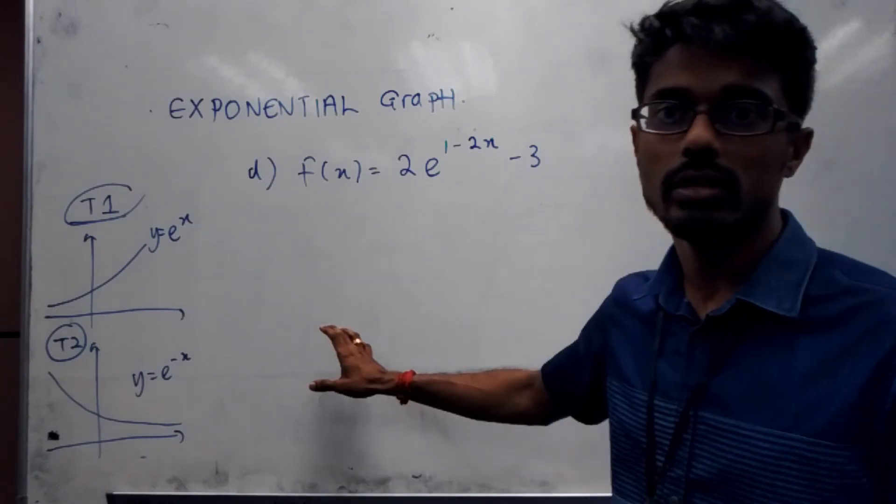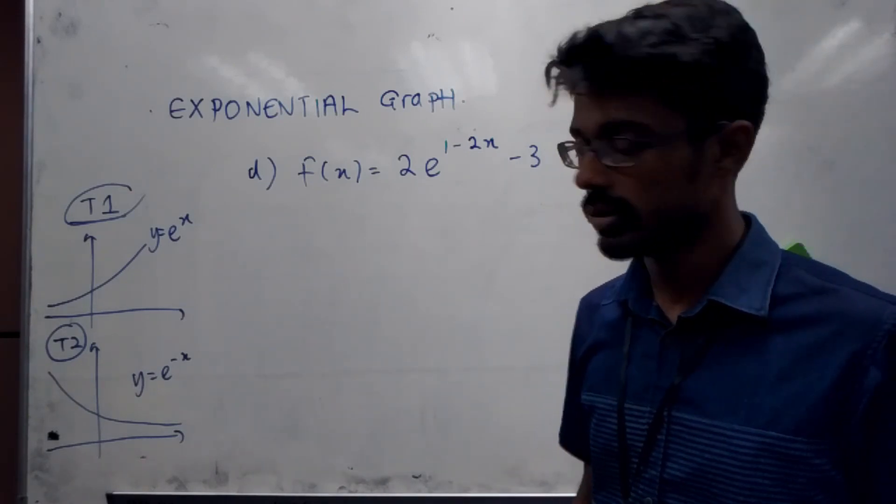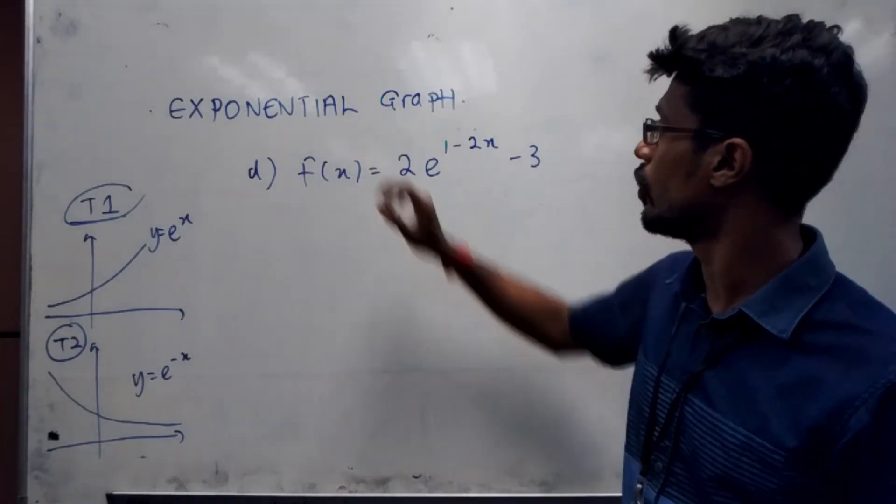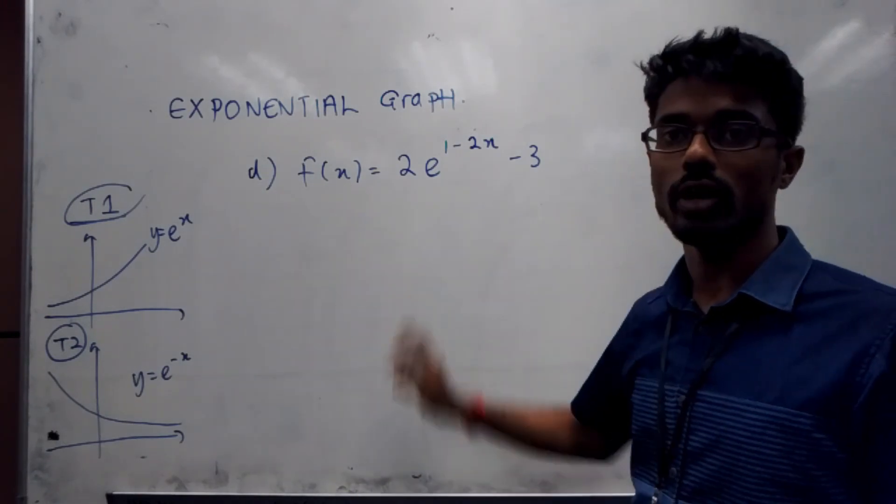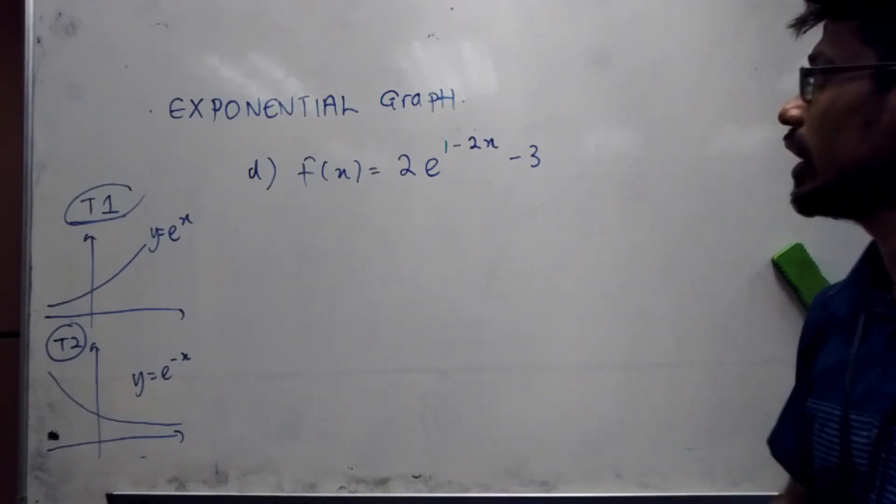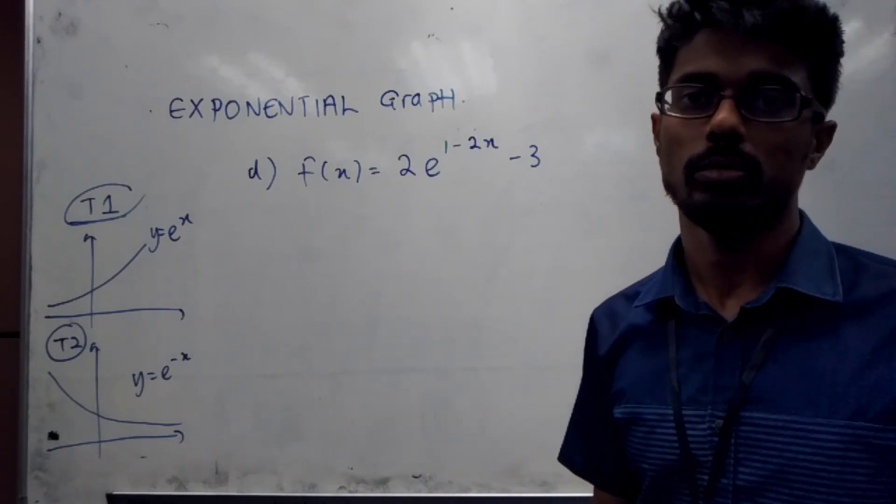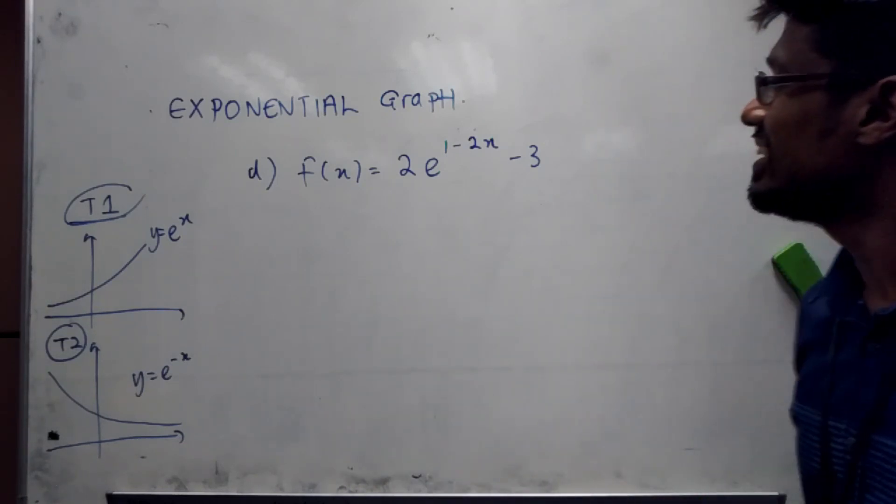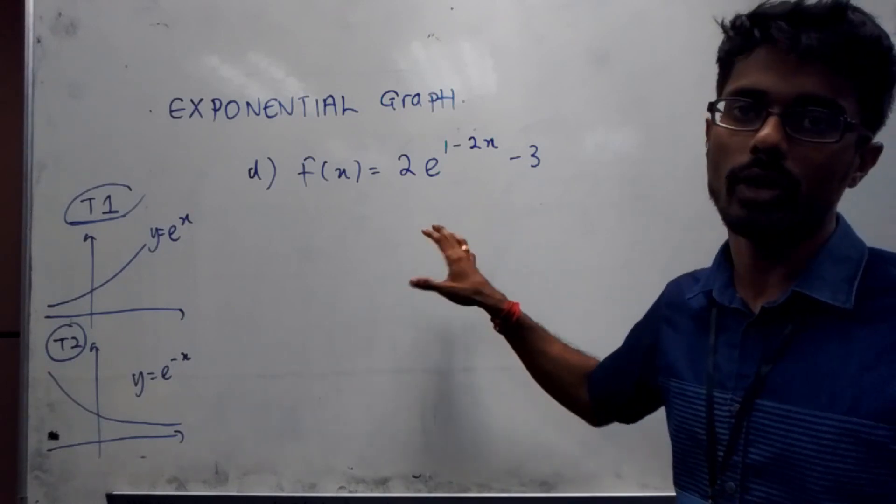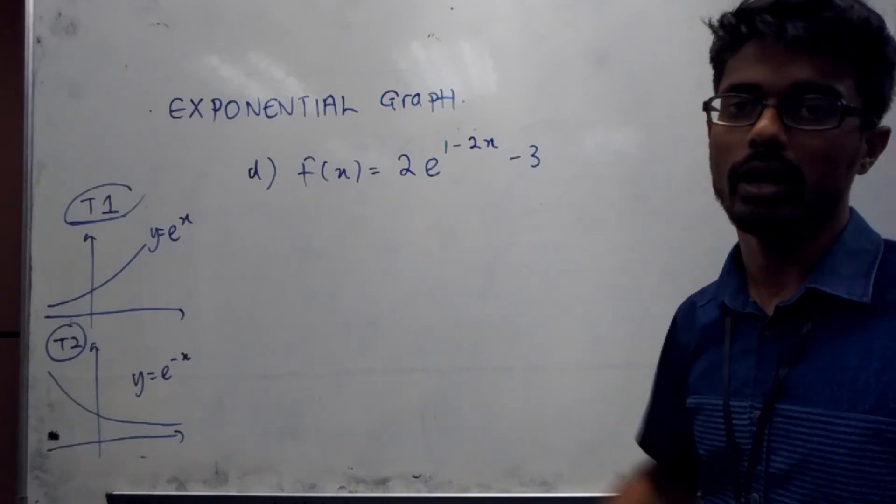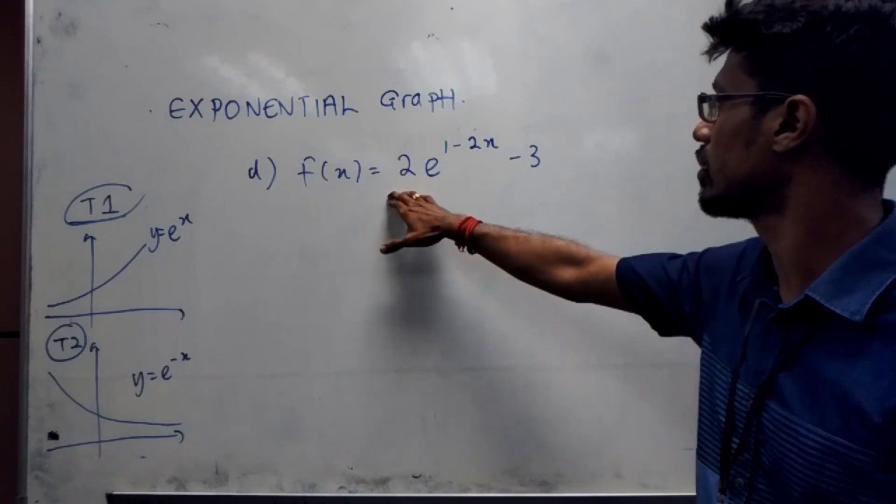Hi everyone, as you can see here, this is the fourth example that I'm going to go through with you for exponential graph. This is the function that we're going to draw. As I have always told you, we need to decide type 1 or type 2. That's number one. Secondly, we need to think what's the graph that we need to draw first and how we are going to reach to the final graph, which is this.